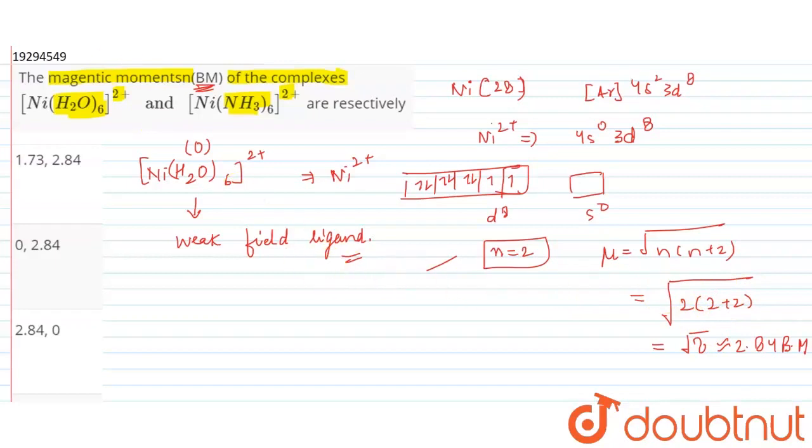It comes to 2.84 Bohr Magneton. Now, let's talk about Ni NH3 whole 6, 2 positive.